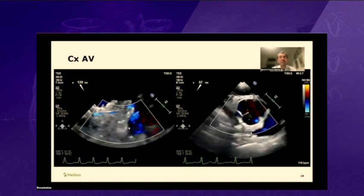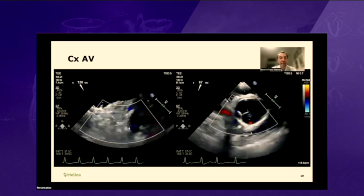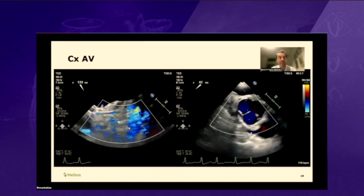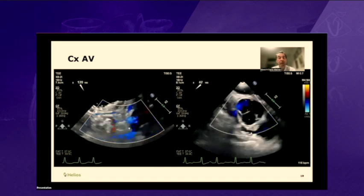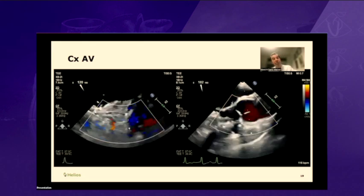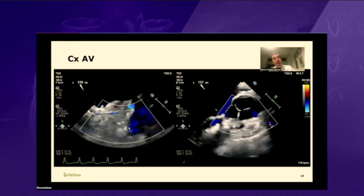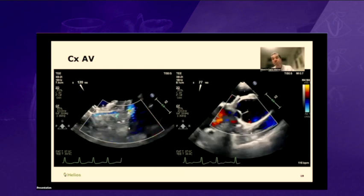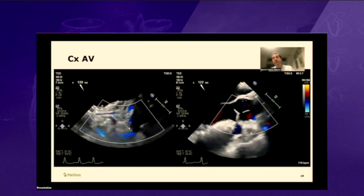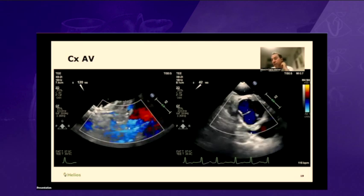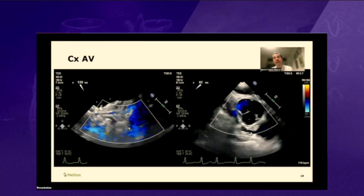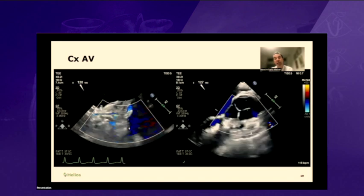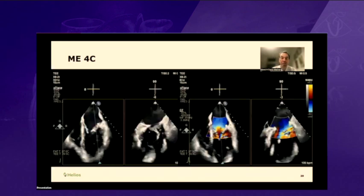Now we just released the cross clamp. With color flow, I can follow the circumflex all the way under the new ring that was placed. I demonstrated right away that there is flow in the circumflex. The heart started to beat, but the heart is empty and not pumping. I checked the aortic valve for regurgitation — there is none.